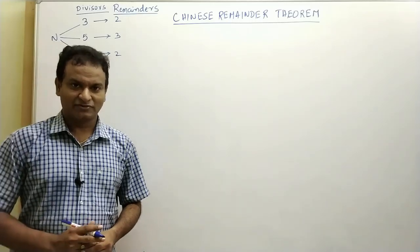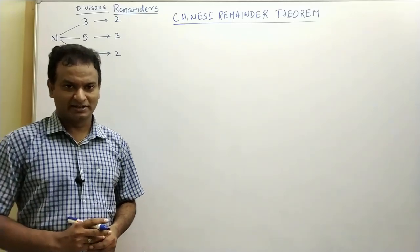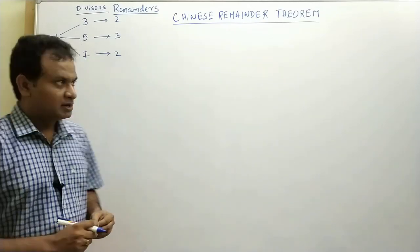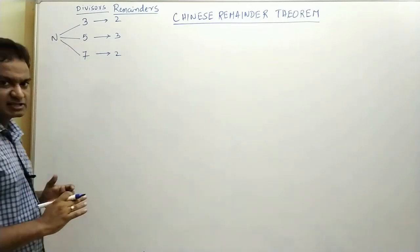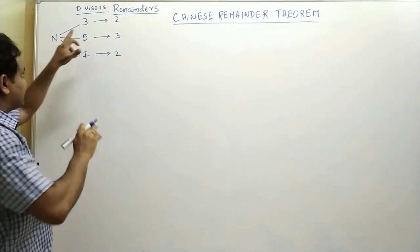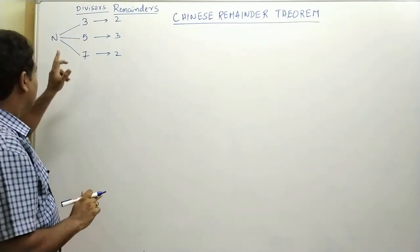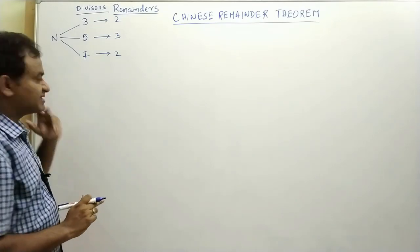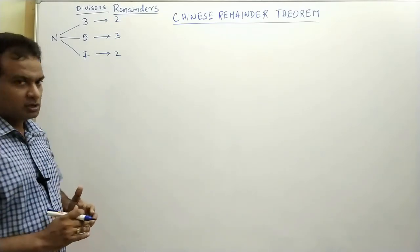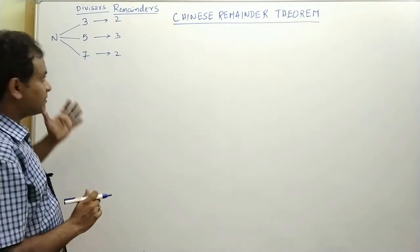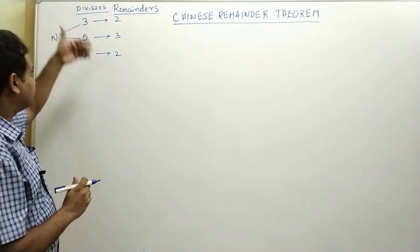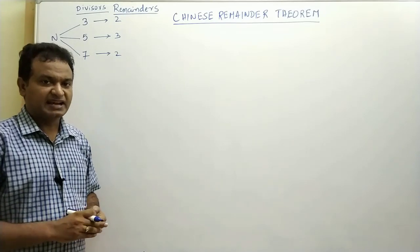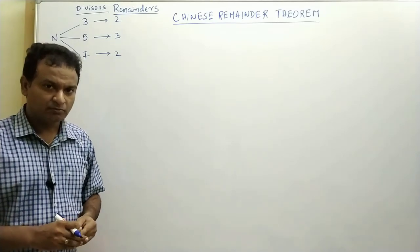In today's lecture, we are going to learn a very important concept called the Chinese Remainder Theorem. Let us have a look at this question: when n is divided by 3, the remainder is 2; when n is divided by 5, the remainder is 3; when n is divided by 7, the remainder is 2. We have to find the minimum number satisfying all three conditions. To solve questions like this, we use the Chinese Remainder Theorem, or CRT.